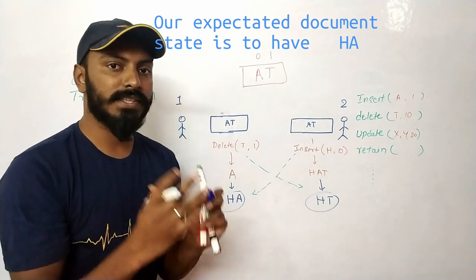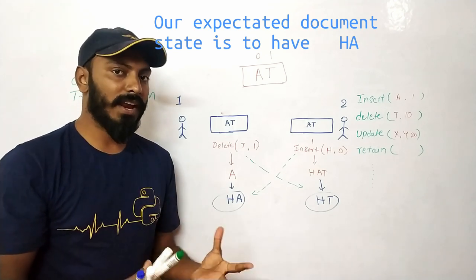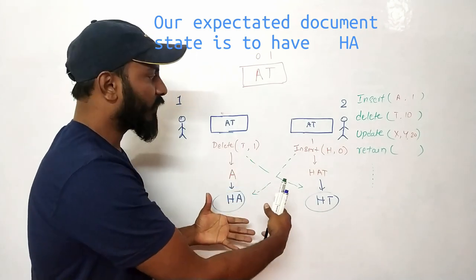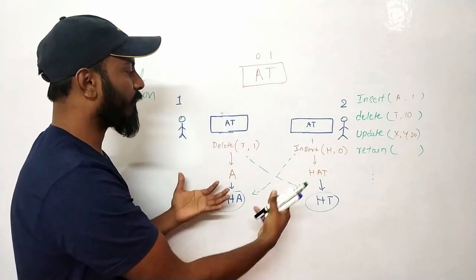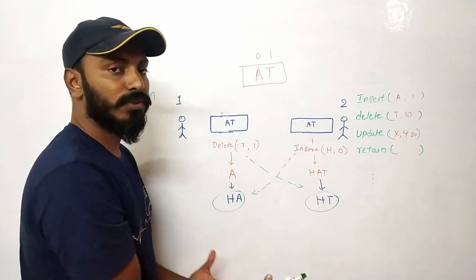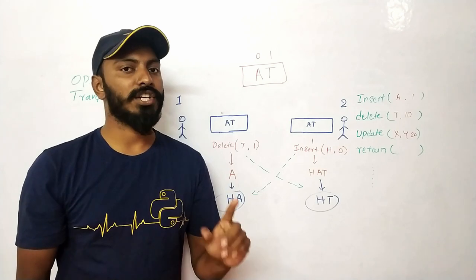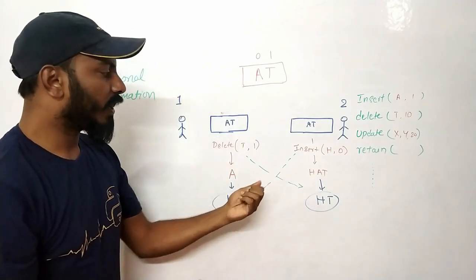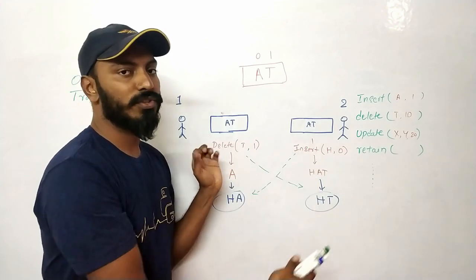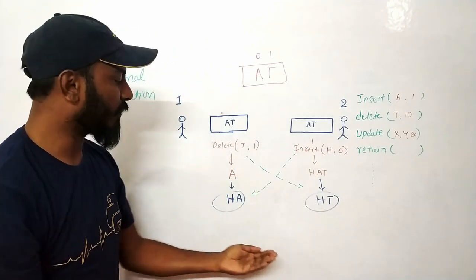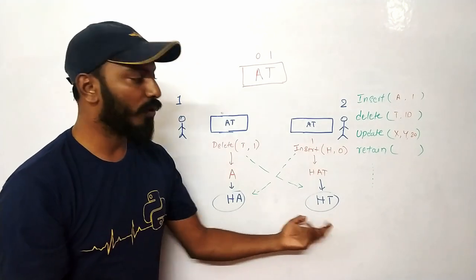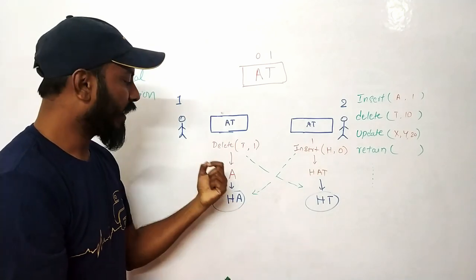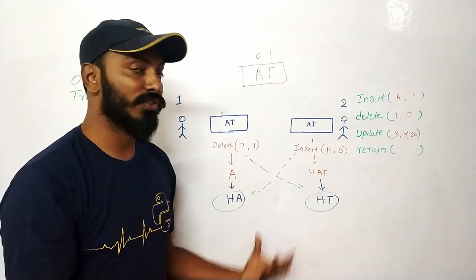Now both users have different copies: one has 'HA' and the other has 'HD'. The intent of collaborative editing is that the document should always converge to one single state — the source of truth. If we just broadcast operations blindly to all users, it won't work, as we just saw. Simply sending operations back and forth without transformation leads to diverging document states.